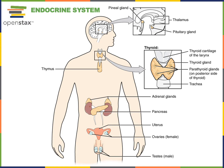Epinephrine is released in response to the sympathetic nervous system and is rapidly released in an alarm phase response to stress. In contrast, cortisol, the steroid hormone produced from the adrenal cortex, is released in response to a tropic hormone from the anterior pituitary known as ACTH, or adrenocorticotropic hormone, which stimulates the adrenal cortex to release the glucocorticoid steroid hormone cortisol.